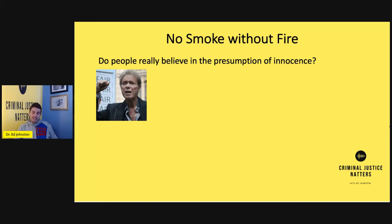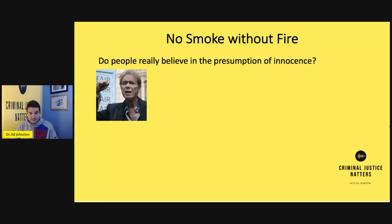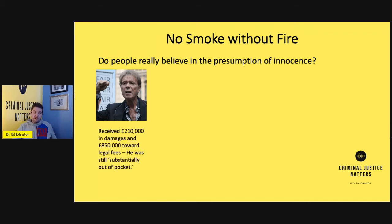In May 2016 the Crown Prosecution Service of England and Wales decided there was insufficient evidence to charge Cliff Richard. But he'd had almost two years of this hanging over his head — whether he was involved in the historic sex offence scandal that ran through England and Wales from around 2013 onwards. He was never charged with any form of offence, and in 2016 the BBC eventually apologised to him. He received £210,000 in damages as well as £850,000 towards his legal fees, but still felt substantially out of pocket.